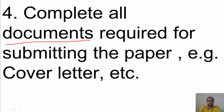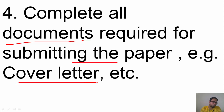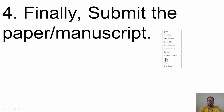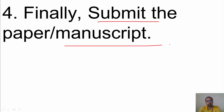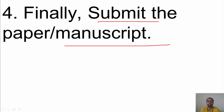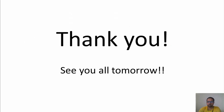Next, complete all the required documents for submission — sign forms from all authors, write a cover letter, and handle all those formalities. Finally, submit your manuscript. One more important thing: check the plagiarism level. It should be less than 10% — for most Scopus and SCI journals they aim for less than 5% — but it should never exceed 10%.